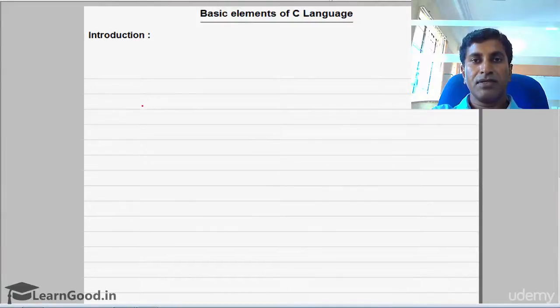We'll see the new chapter on basic elements of C language. In this chapter, we'll discuss all the small components which are required for writing every C program. For example, in every program you would like